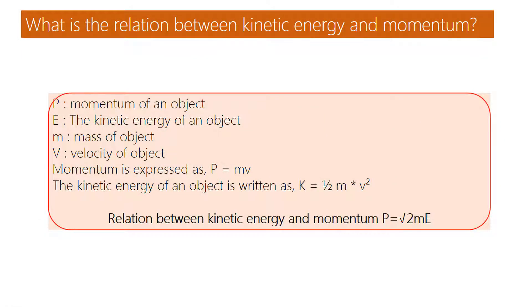What is the relation between kinetic energy and momentum? p is momentum of an object, E is the kinetic energy of an object, m is mass of object, v is velocity of object.